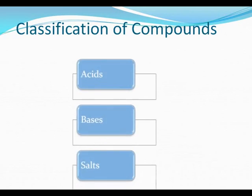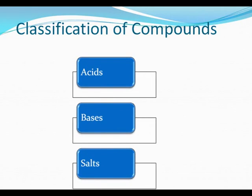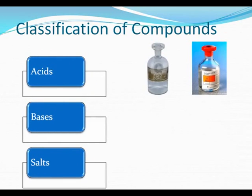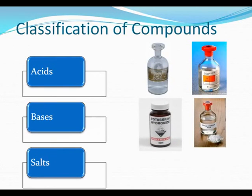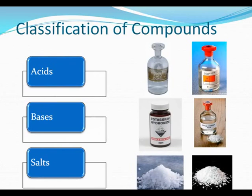First of all, let's understand how compounds are classified. Compounds in general are classified into only three categories: acids, bases, and salts. For example, acids include hydrochloric acid and sulfuric acid; bases include potassium hydroxide and sodium hydroxide; and salts include sodium chloride or calcium chloride. We will discuss in detail what an acid, base, and salt are in the chapters to come. In this chapter, we accept that acids and bases are corrosive substances with a certain set of properties.